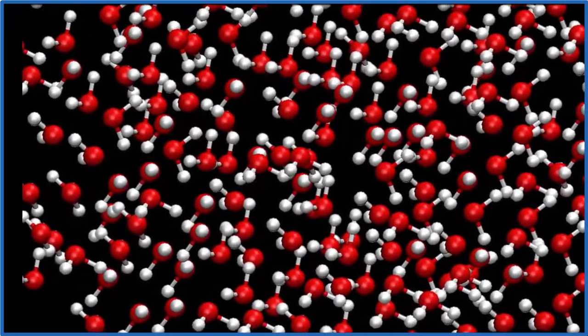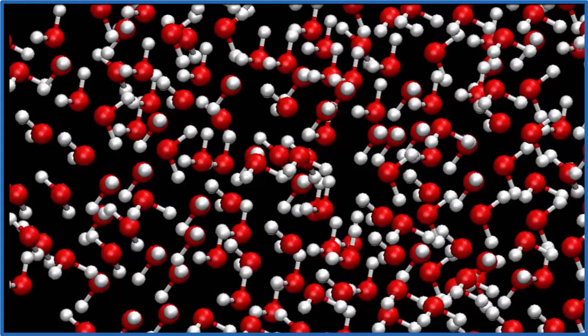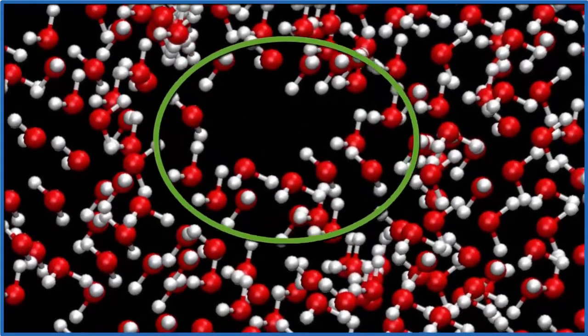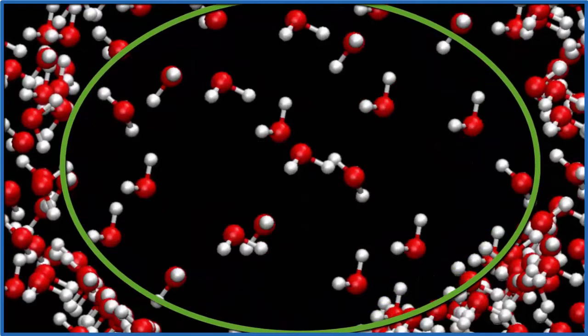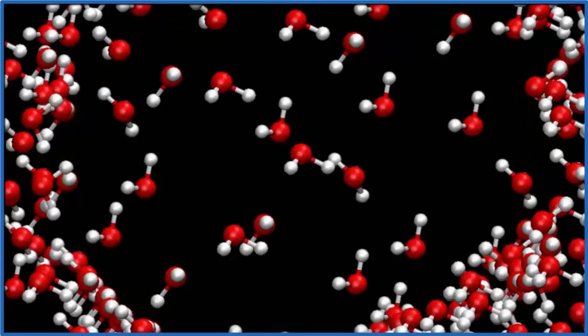To understand why bubbles form during boiling, imagine a group of water molecules, and as you add heat, some of them spread out and form a gas, water vapor. When they spread out, they push the molecules around them away, and that forms the bubble that you see. That bubble rises to the surface. That's boiling.